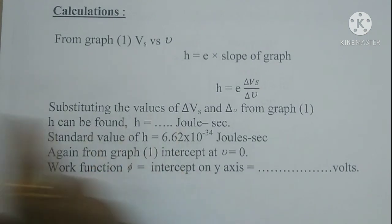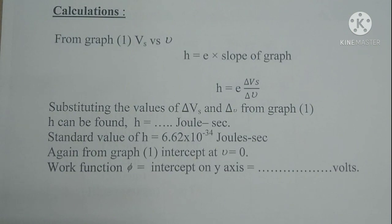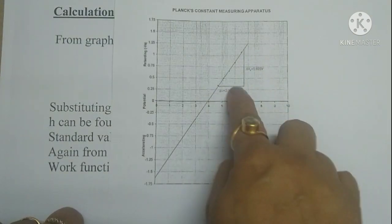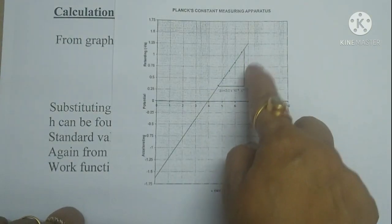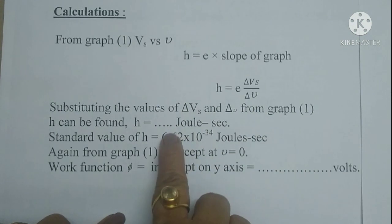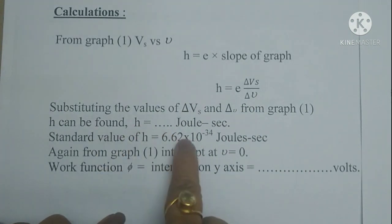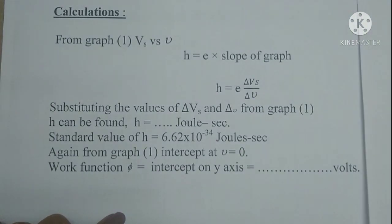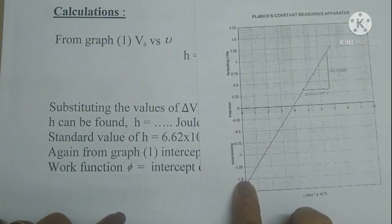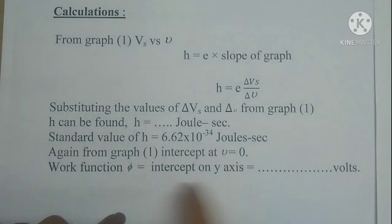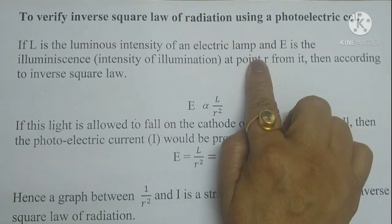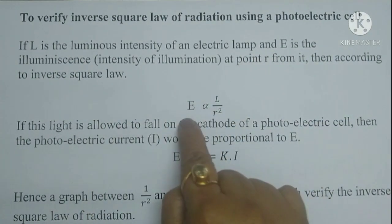We plot a graph of Vs versus frequency ν. The slope of the graph gives us h/e, so Planck's constant h = e × (ΔVs/Δν). The standard value of h is 6.62 × 10⁻³⁴ J·s. From the y-intercept of the graph we also obtain the work function φ. This completes the first part of the experiment.